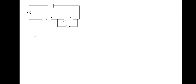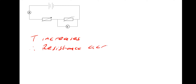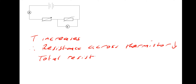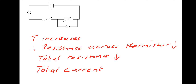In words: temperature increases, therefore the resistance across the thermistor decreases, so the total resistance would also decrease. The total current — or more specifically the reading of the ammeter, which is the total current — will increase.